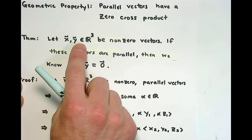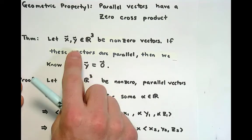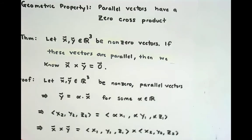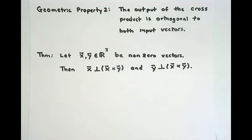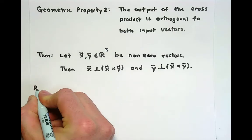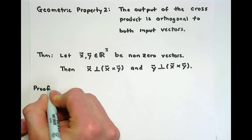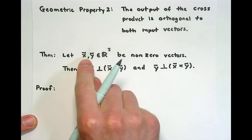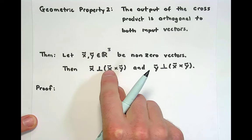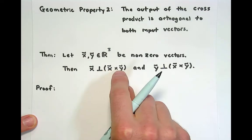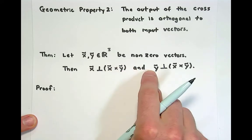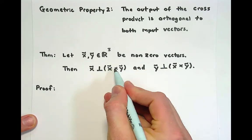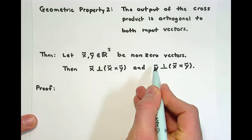The whole point of this is that when you have a zero cross product, the two vectors must be in the same direction, and vice versa. If the two vectors are in the same direction, you can conclude you have a zero cross product. Let's move on to the second geometric property. This is the idea that when we take the cross product of two vectors, that vector will be orthogonal to the two inputs. So the output of the cross product is orthogonal to both inputs.